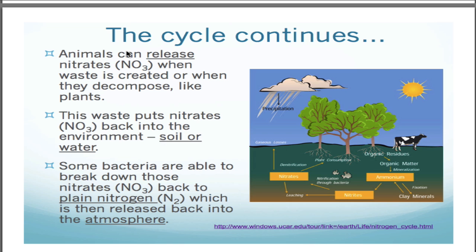As the cycle continues, animals can release nitrates back into other spheres in a couple of ways. One is when they make waste — there's a lot of nitrogen in manure and fertilizers from farms. Also, when organisms die, decomposing bacteria release the nitrogen that's inside the organism, and that goes back into the geosphere for bacteria to have fun with. They can turn that nitrogen back into ammonia or into nitrates that plants can use again.